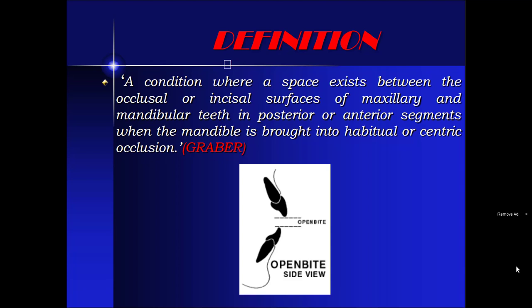Open bite in orthodontics is a malocclusion of the vertical plane, as is deep bite also. It is one of the most difficult malocclusions to treat. The complexity is due to a combination of skeletal, functional, and habit-related factors. According to Graeber, it is the condition where a space exists between the occlusal and incisal surfaces of maxillary and mandibular teeth in posterior or anterior segments when the mandible is brought into habitual or centric occlusion. In other words, there is no vertical overlapping of upper and lower teeth.